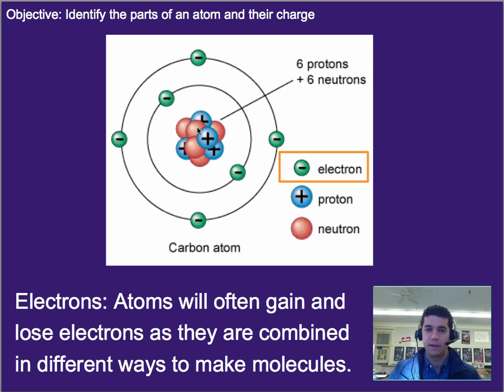Now, normally, atoms we talk about, we just assume to be neutral. And if they're not neutral, we call them ions. And that's usually when there's an imbalance of protons and electrons, meaning there are too many electrons or too few electrons, since electrons are the ones that are moving around and being added or taken away as things combine.